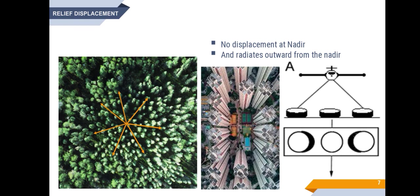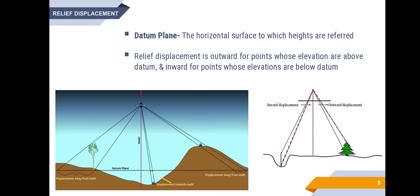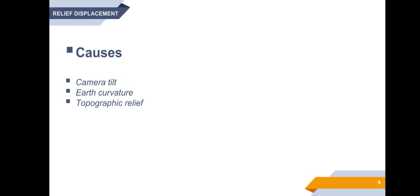In this image, the phenomenon is somewhat more clear. The horizontal surface to which heights are referred is known as a datum plane. With respect to a datum, relief displacement is outward for points whose elevations are above the datum and inward for points whose elevations are below the datum. Camera tilt, curvature of the earth and terrain relief all contribute to shifting photo image features away from the true geographic location.